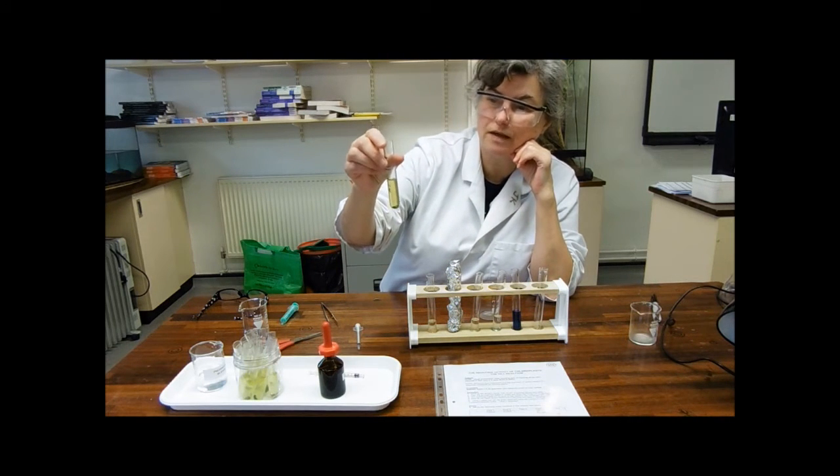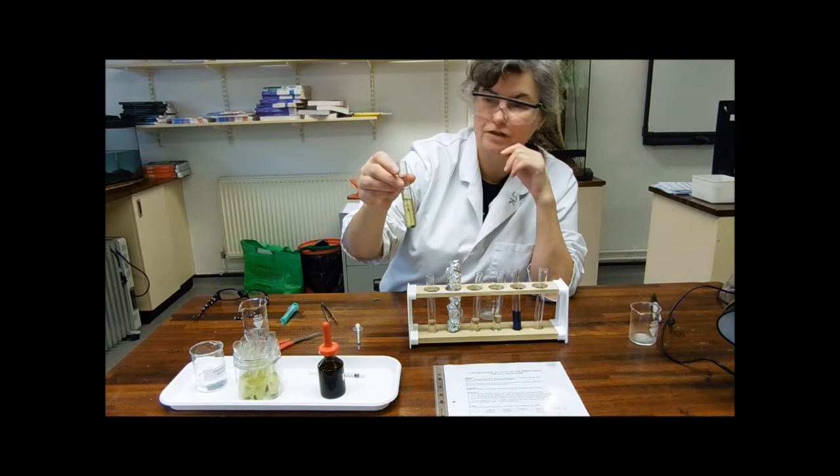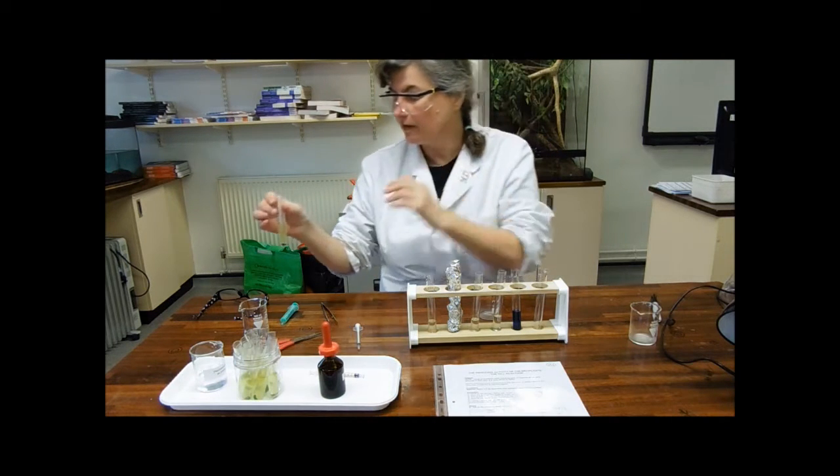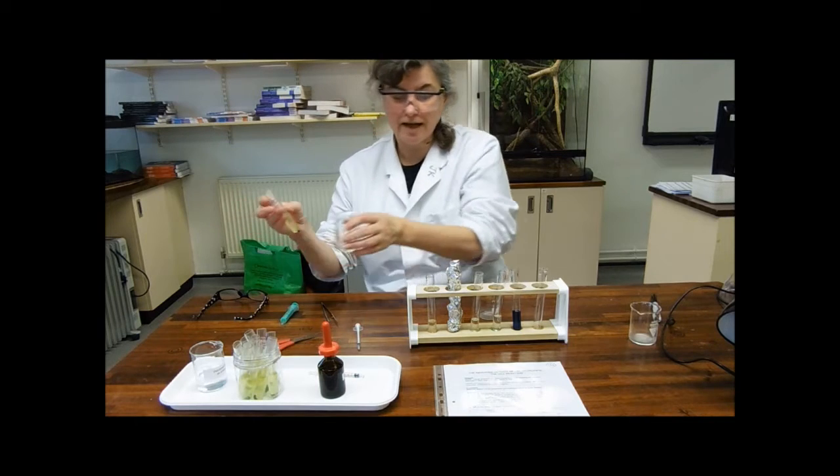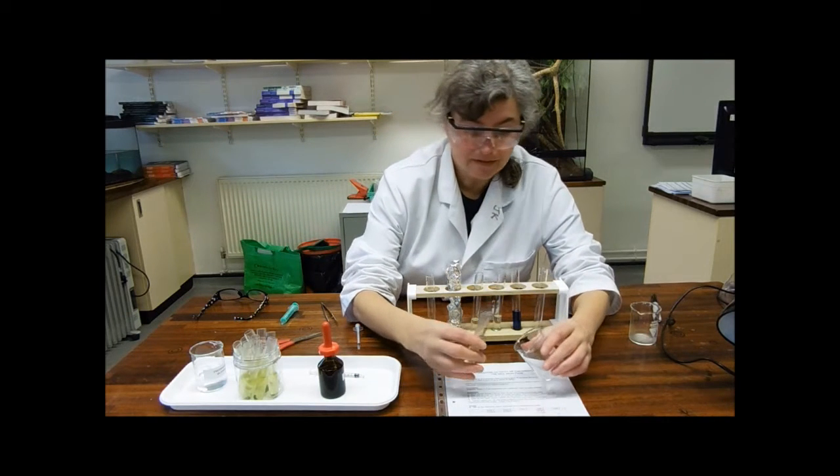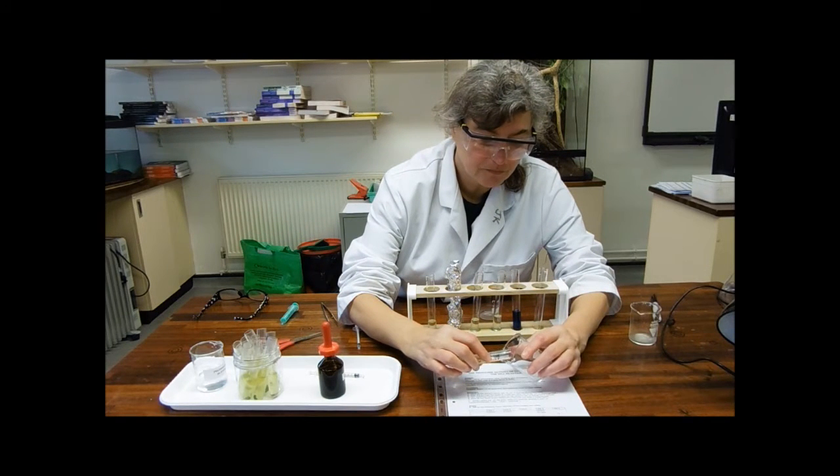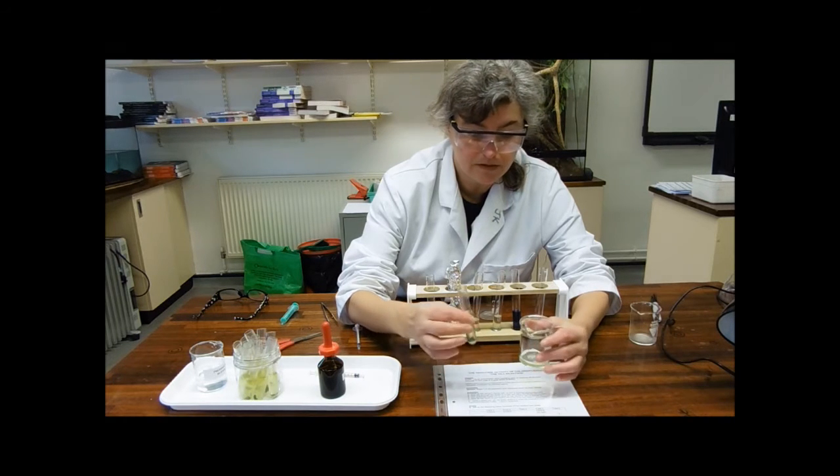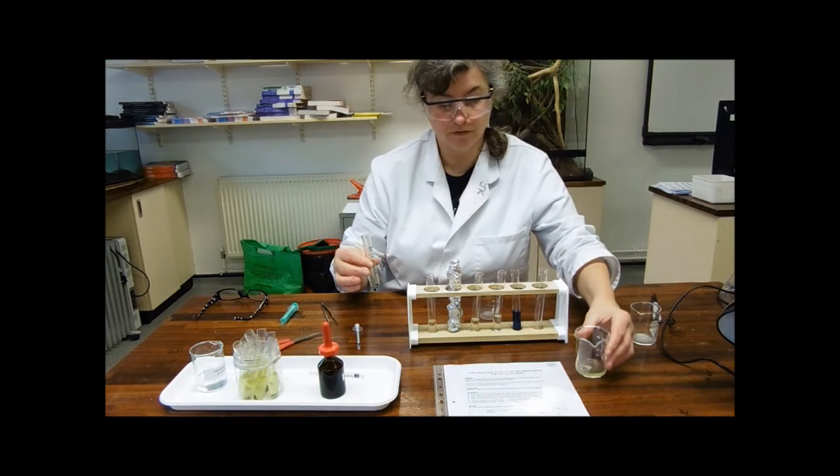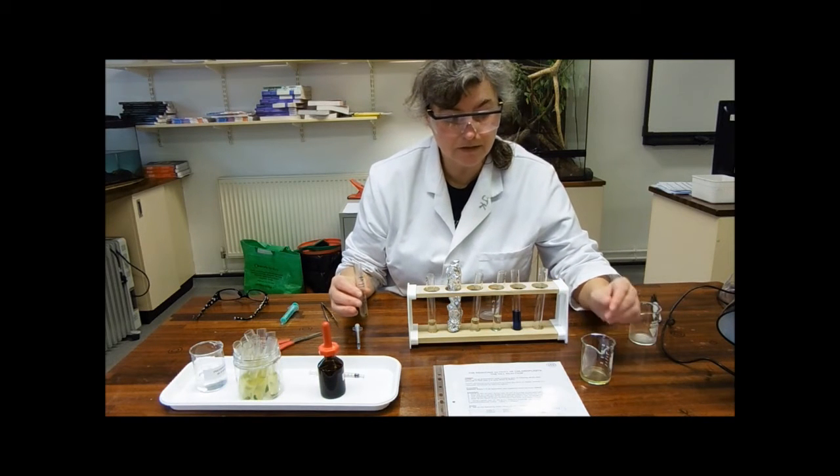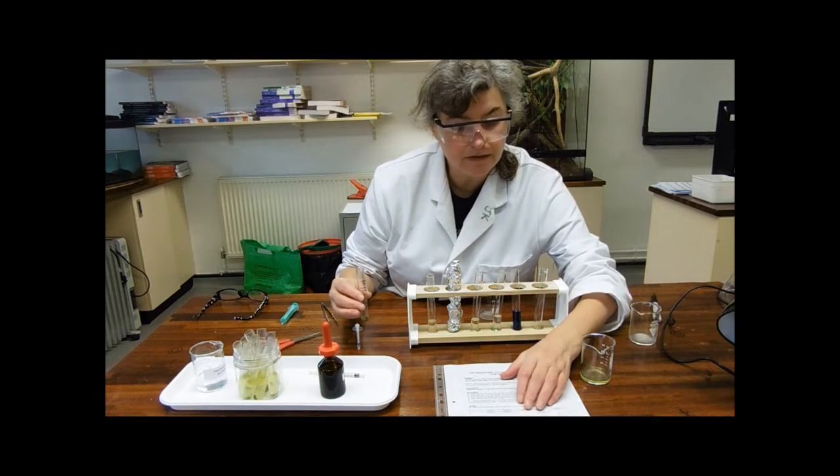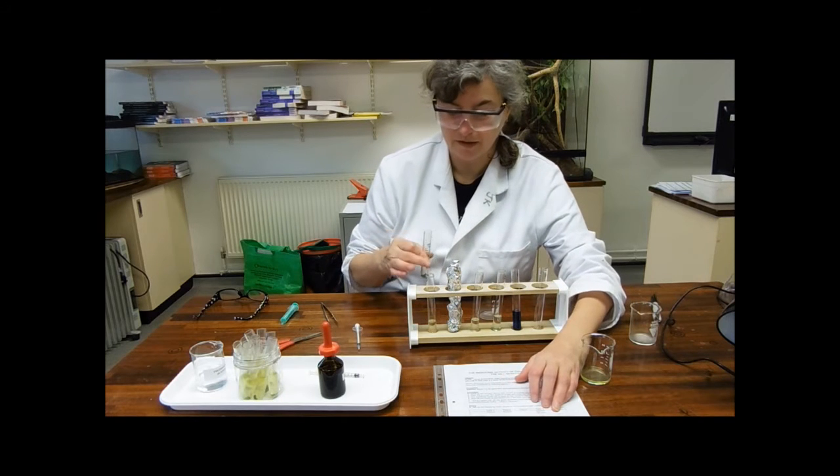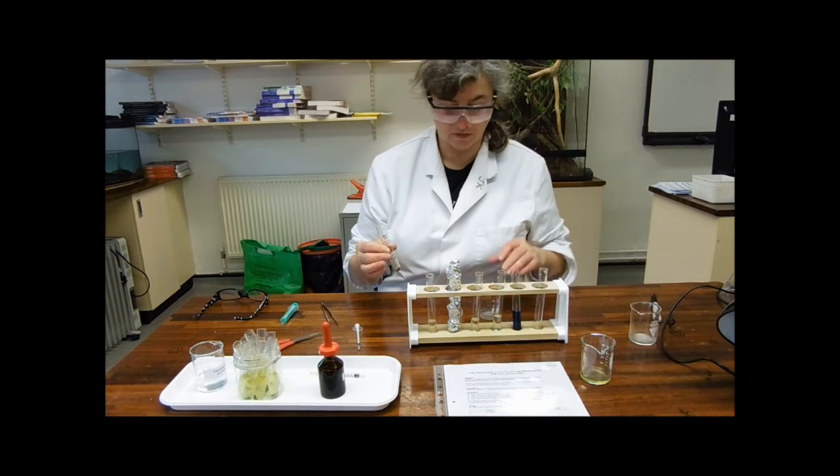Some of the smaller chloroplasts have ended up in what's called the supernatant. So I'm just going to drain off very carefully the supernatant. This is only going to have a few chloroplasts and we are going to use that in one of the tubes. In tube five, I'm going to need one centimeter of supernatant.